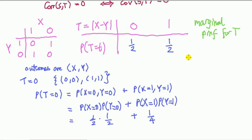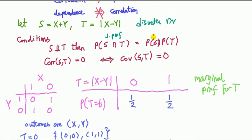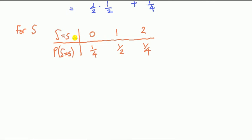Now I want you to do the same thing but for S. You'll find that S can take the values 0, 1, or 2. Calculate the probabilities just as I did for T. The answers add up to one, so that's fine. This gives us the marginal probability mass function for S.